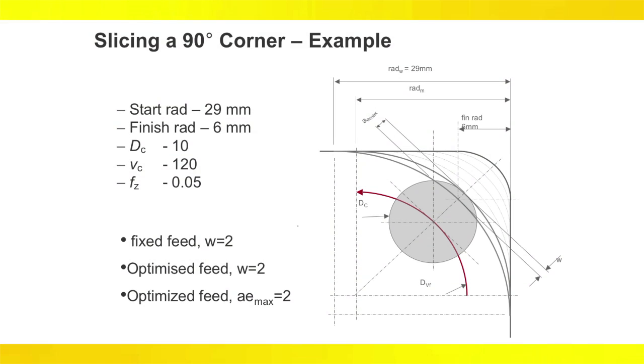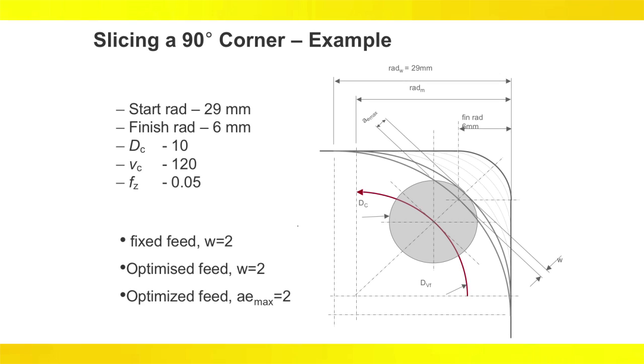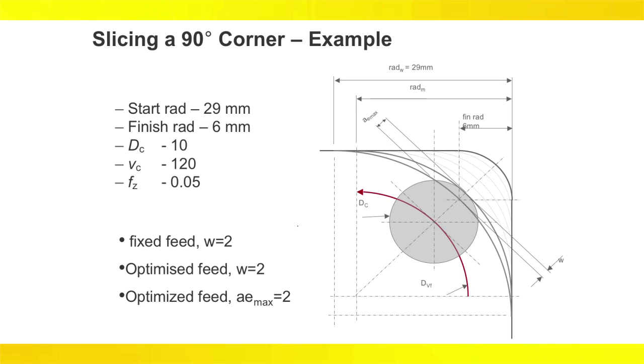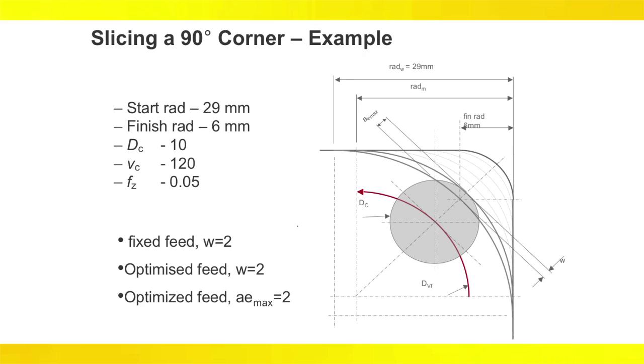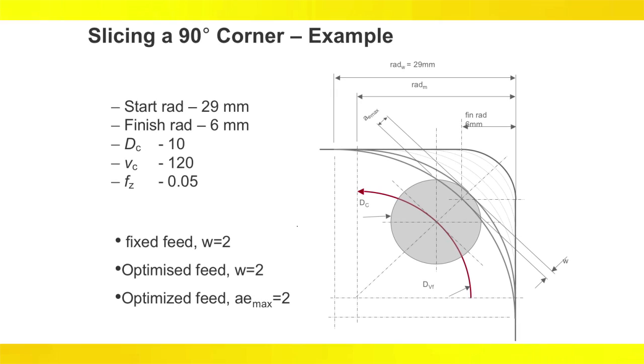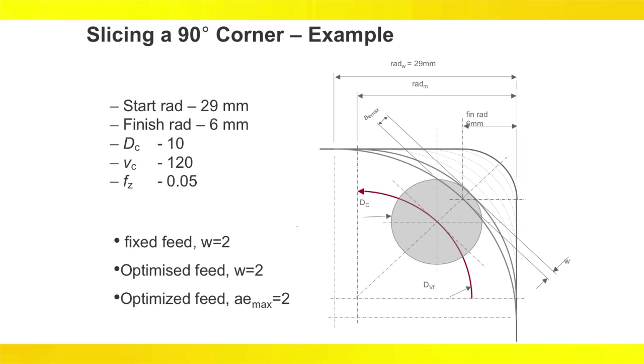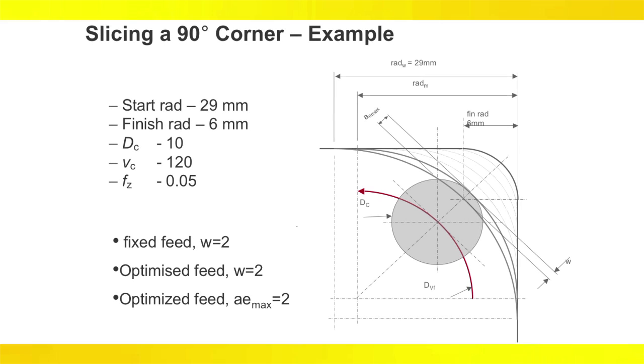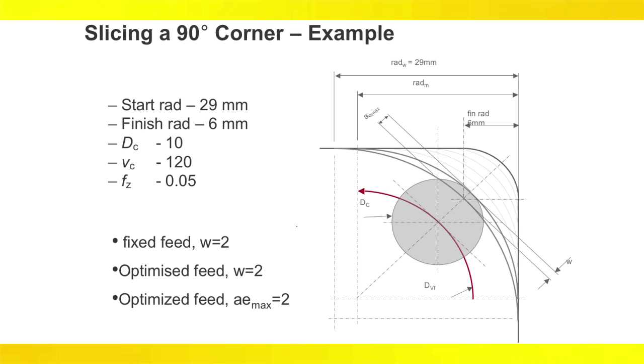In this example, notice that calculating the optimized feed rate and radial engagement ensures that the tool is cutting securely and efficiently. While not using this technique will initially result in faster cut times, it will overload the tool and lead to poor tool life, surface finish, and unreliability.